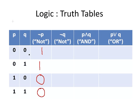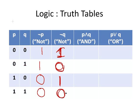Not Q — we're just going to do the same thing with the second column. Where Q is 0, we have 1. We have 0 here. We have 1 here, and we have 0 here.